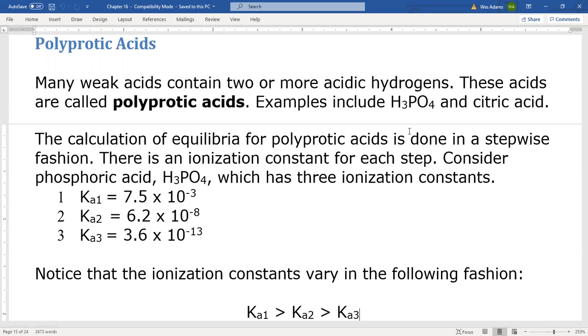Examples could include things like phosphoric acid, citric acid, even sulfuric acid, although sulfuric is considered to be a strong acid with respect to the first ionization. So it's on the strong acid list, not so much with the second ionization.